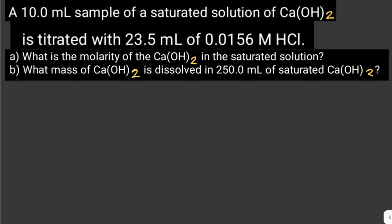A 10 mL sample of saturated solution of calcium hydroxide is titrated with 23.5 mL of 0.0156 molar hydrochloric acid. What is the molarity of calcium hydroxide in the saturated solution? And what mass of calcium hydroxide is dissolved in 250 mL of saturated calcium hydroxide?